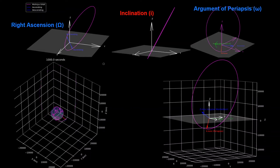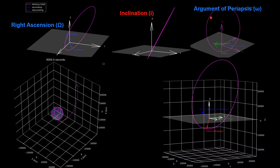The goal of this video is to provide an intuitive understanding of how the three Keplerian orbital elements used to define the orientation of an orbit with respect to the inertial frame are defined as a 3-1-3 Euler angle sequence. These three orbital elements are the right ascension of the ascending node, orbital inclination, and argument of periapsis. They are defined this way because it is intuitive for us humans to understand.